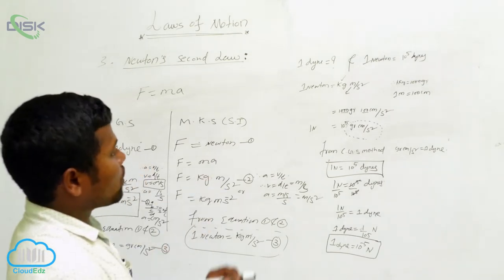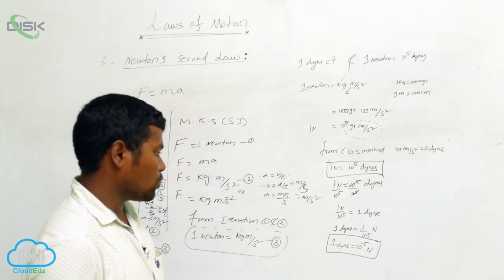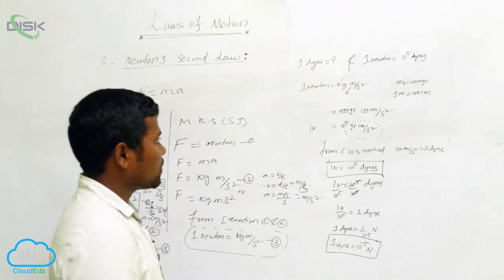So 1 newton equals 10 to the power of 5 dynes. Next, 1 dynes equals 10 to the power of minus 5 newtons.